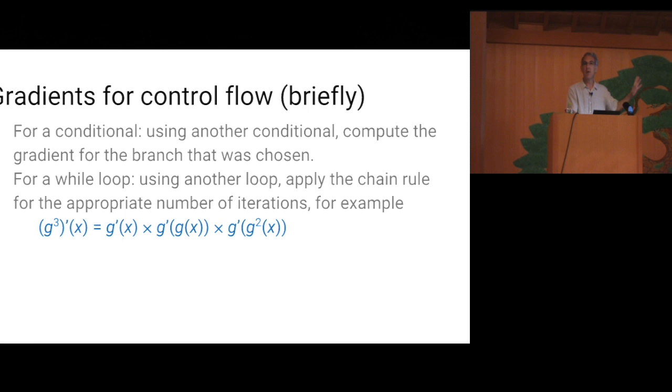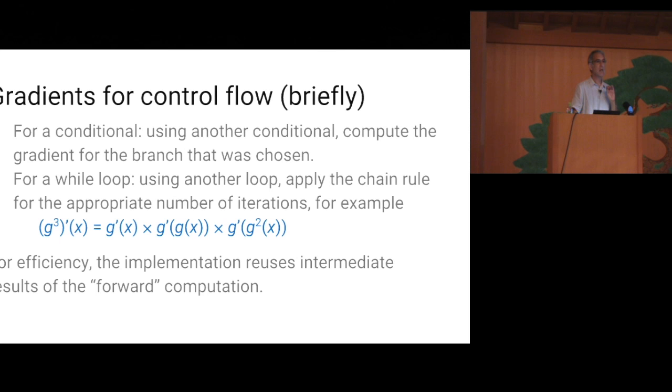In both cases, we do this only for graphs generated from high-level programs with conditionals and while loops. We don't do it for arbitrary graphs that may contain merge, switch, enter, exit, and next iteration. And indeed, gradients might not be well defined for arbitrary such graphs. One implementation difficulty of all of this is that the gradient computation needs to reuse information from the forward computation of the function. In the case of the conditional, we need to remember which branch was taken. In the case of the loop, we need to remember how many times we went around the loop. But there is even more than that. If you look at g3 prime, you can see that it uses g of x and g g square of x. So we need to remember some of the intermediate values of the forward computation. And doing this in a space efficient manner is quite challenging and a place where we had to work quite hard and where more work might make sense.